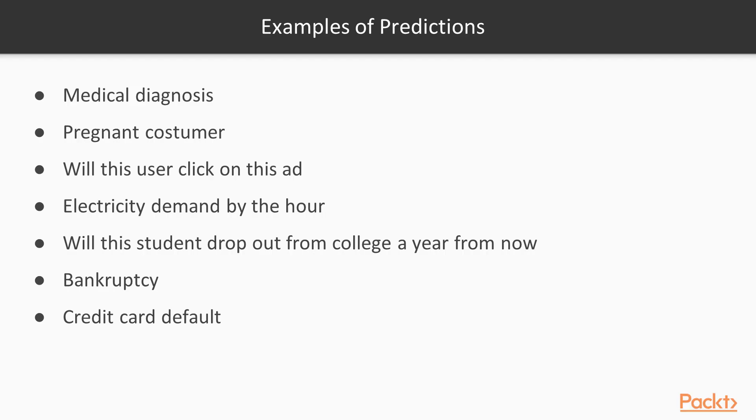For example, a diagnosis for the disease of a medical patient could be considered a prediction, even though the patient already has the disease. Predicting which female customers of a retail store are pregnant, so the store can send them deals, is also considered a prediction. And here we have a few other examples.